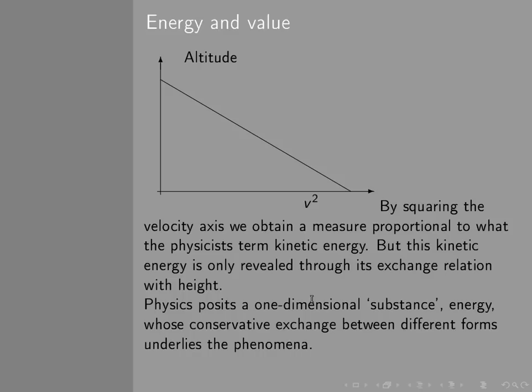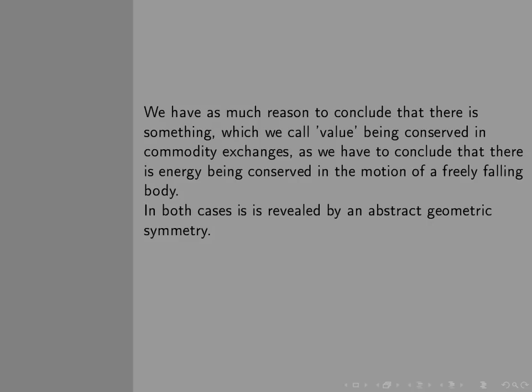Physicists posit this one-dimensional substance called energy through observing conservative exchange between different forms of energy. And this conservative exchange actually comes down to being able to plot these kinds of diagrams in which altitude and velocity squared exchange with one another on a straight line as you plot it. We have as much reason to conclude that there is something called value being conserved in commodity exchanges, as we have to conclude there is something called energy being conserved in the motion of a freely falling body. In both cases, the existence of this conserved quantity is revealed by abstract geometric symmetry.